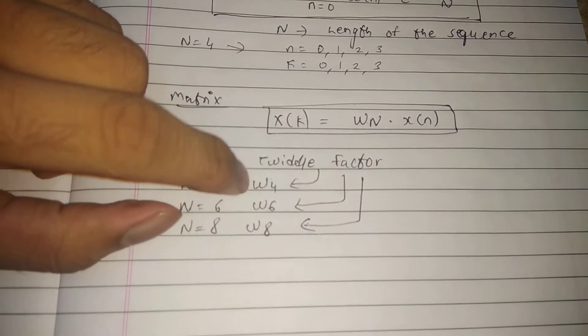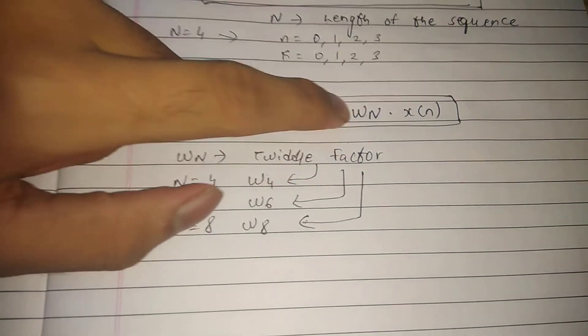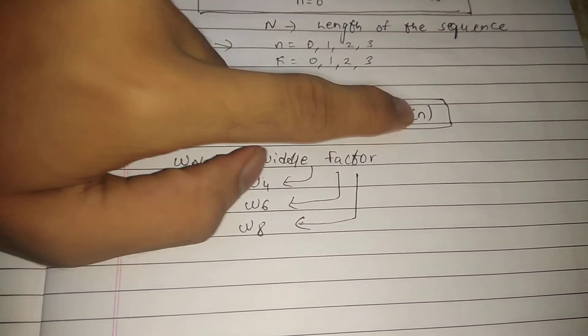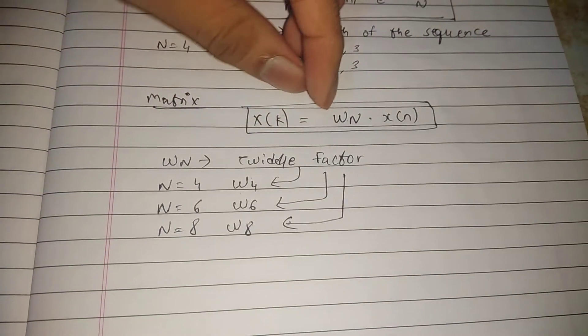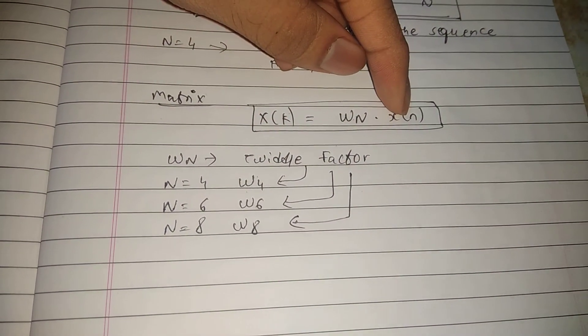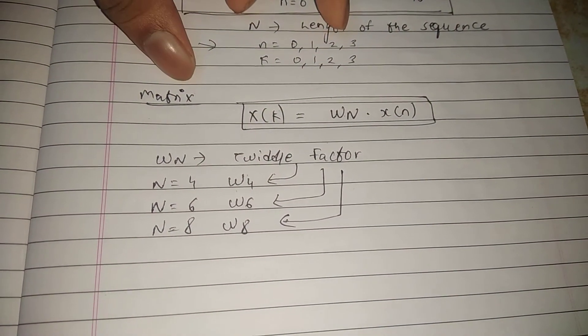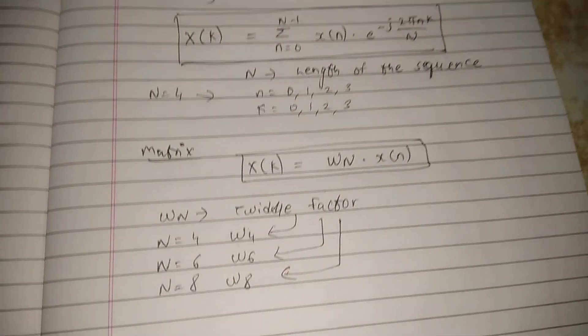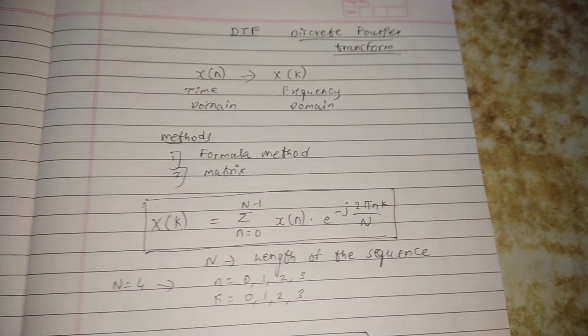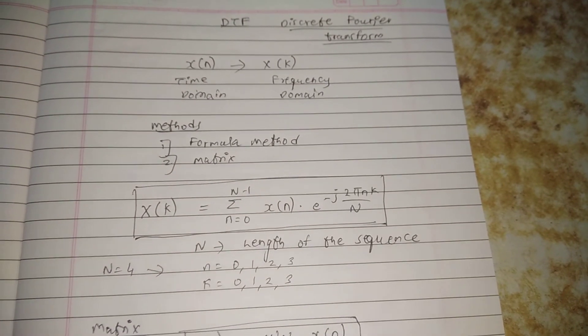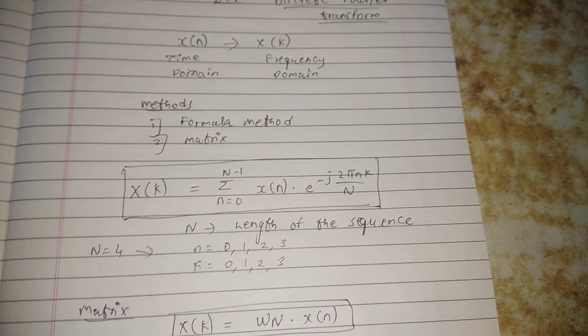You will have twiddle factor 4, that means ω4, times x(n). So you will have to multiply the matrix of the twiddle factor with your x(n), then you will get the x(k) value. This was all for the basics of Discrete Fourier Transform. In the next video we'll discuss the numericals.